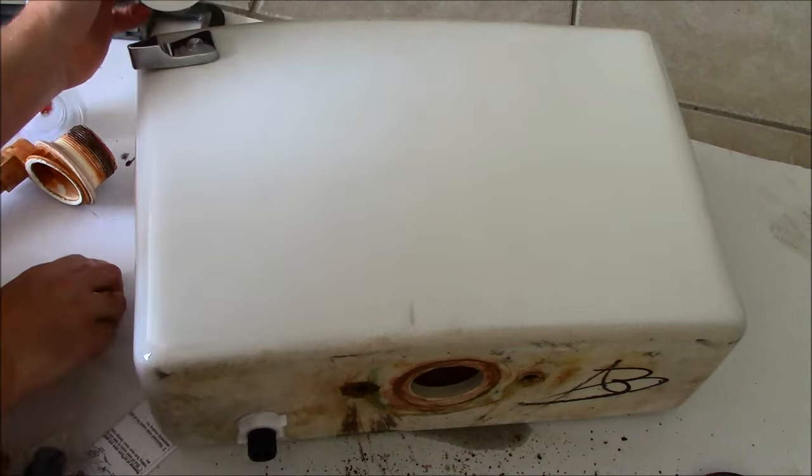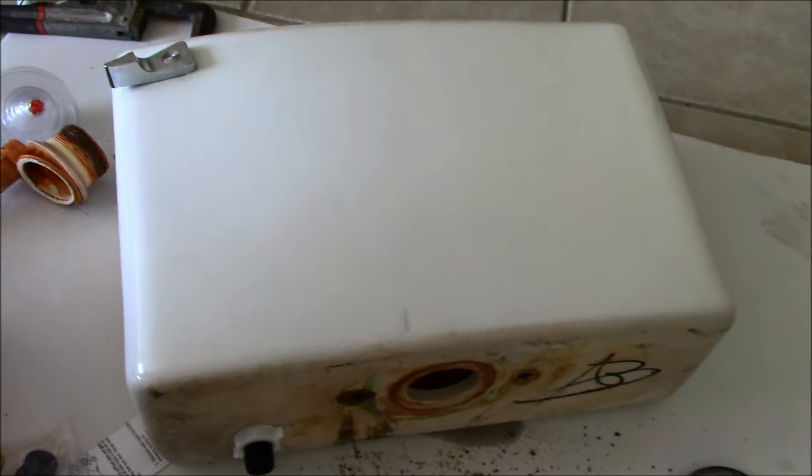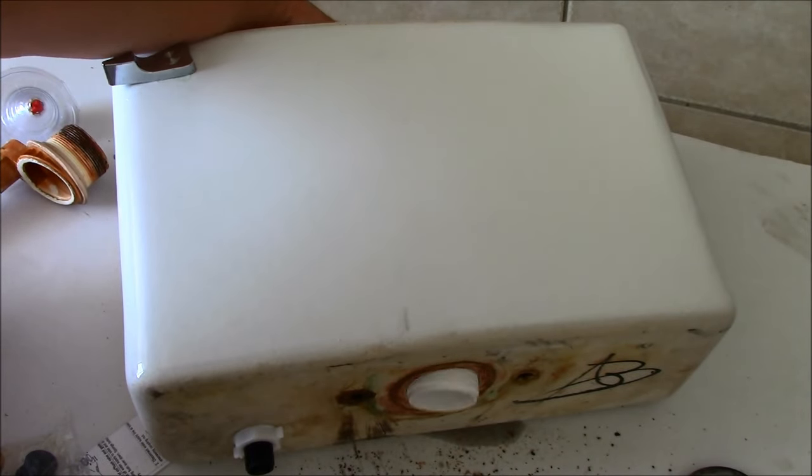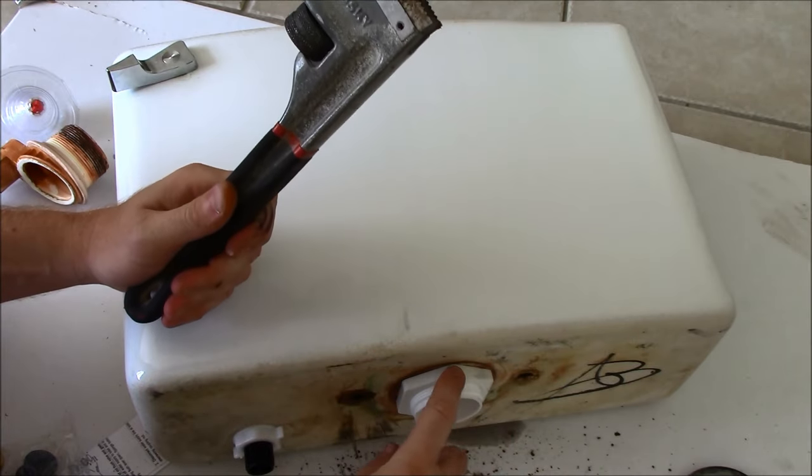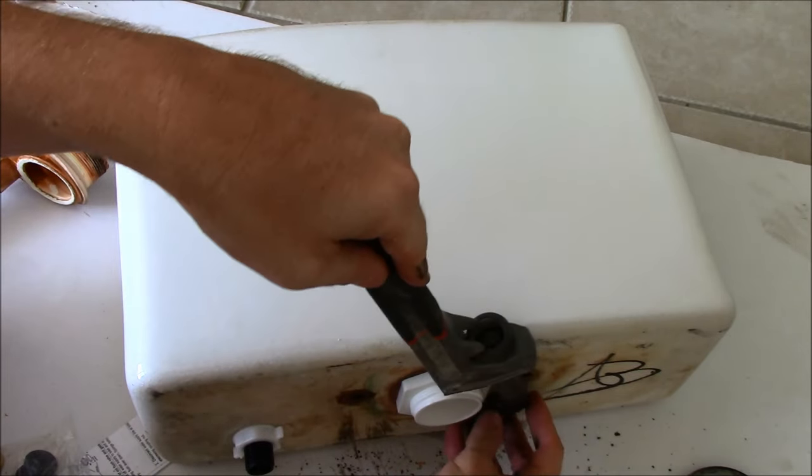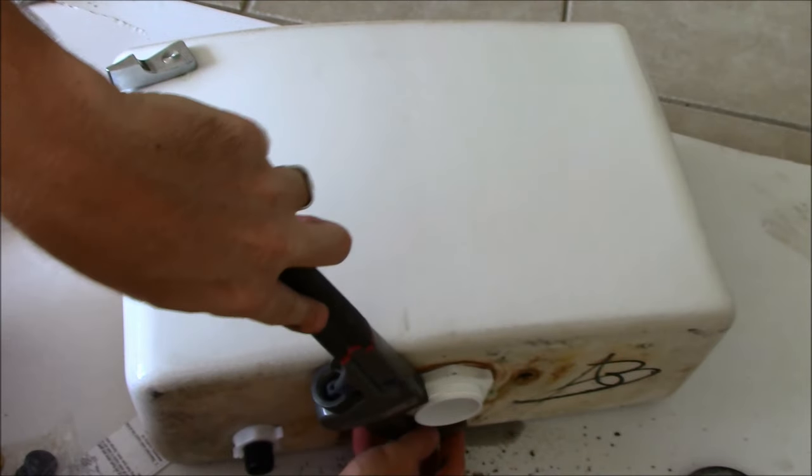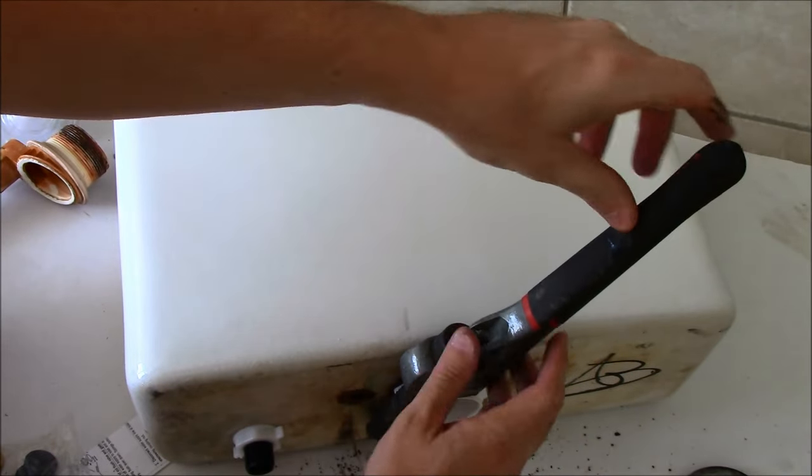So now let's start putting it back together. Place the flush valve and overflow tube in. Put the little nut on. This nut doesn't need to go on super tight. We just need to snug it up.